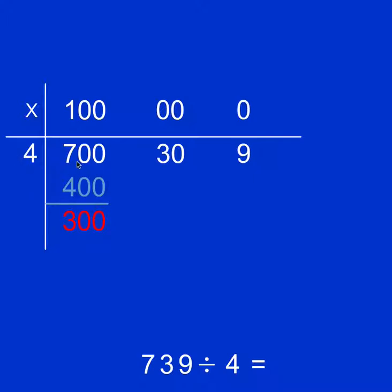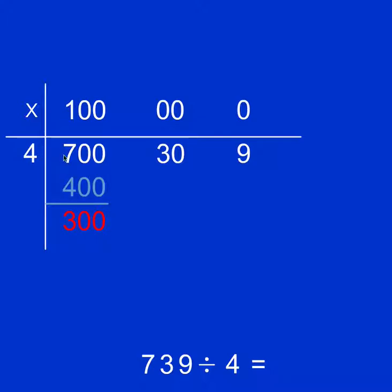So if I've got $100 for each child, I can give them $100 each. That would be $400, leaving $300 left over. If I gave them $200 each, I would have given them $800, which means I'd be short $100. So I can only give them $100 each, and the $300 I'm going to turn into $10 notes.